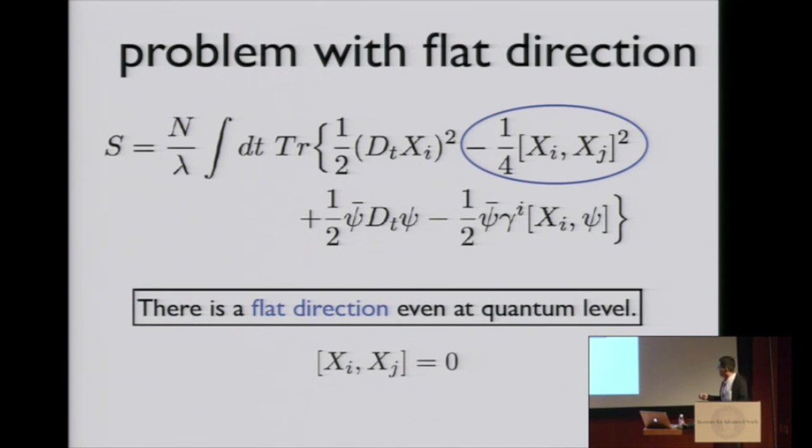This theory has a problem with the flat direction. In this action, we have a commutator square term here, so this is a potential term. But when Xi and Xj all commute, there is no potential. There is a flat direction. When we don't have supersymmetry, then this flat direction is lifted by quantum correction. But in this case, because of supersymmetry, this flat direction survives even at quantum level.